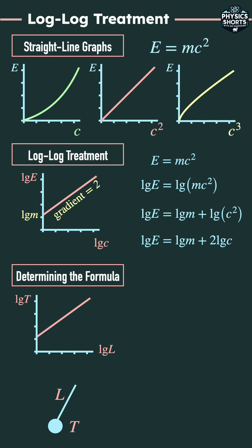That means the general formula is Y equals MX plus C. And the actual graph would be log T equals M log L plus C.